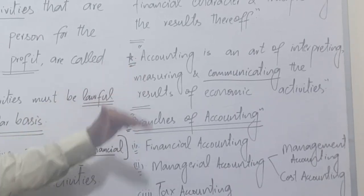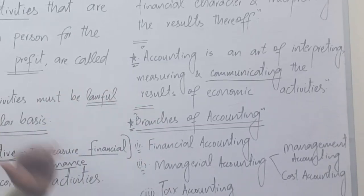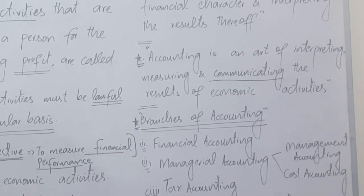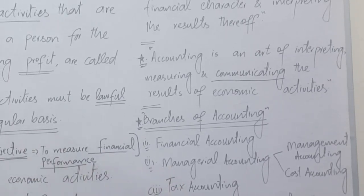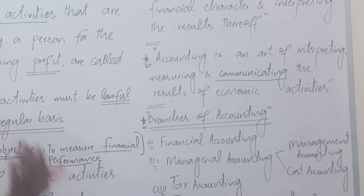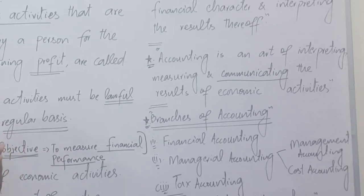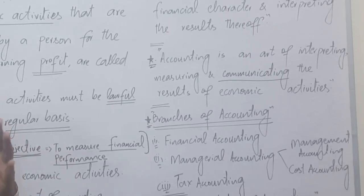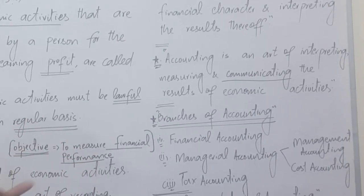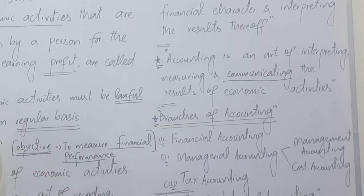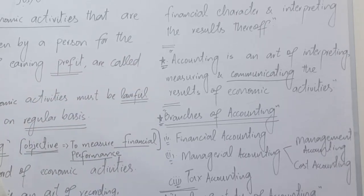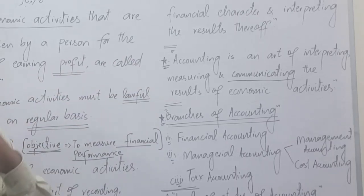We record all the transactions, we get the results, we measure financial performance — but we must not keep that financial performance only to ourselves. We must communicate it. Companies prepare annual reports and publish them. Until you communicate, the purpose of accounting is not fulfilled — the goal for which accounting was created is not achieved. So we must communicate the results of those economic activities.